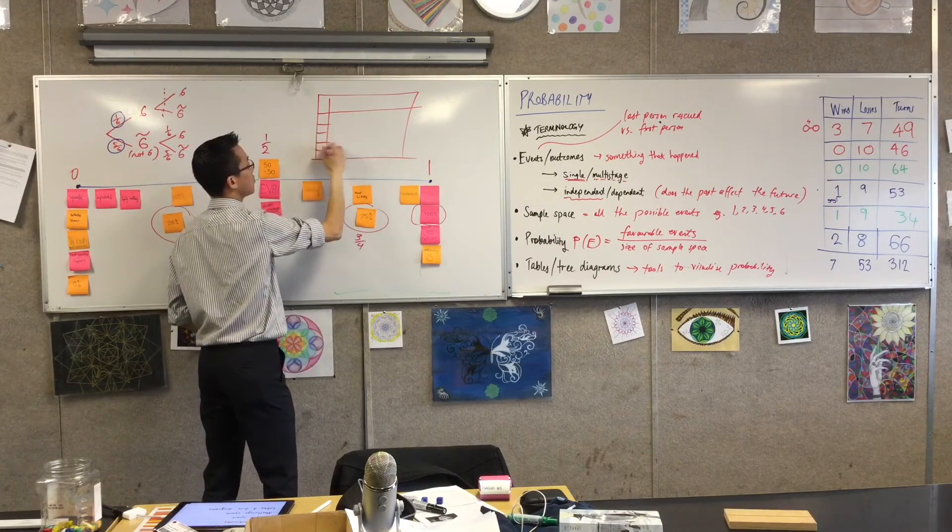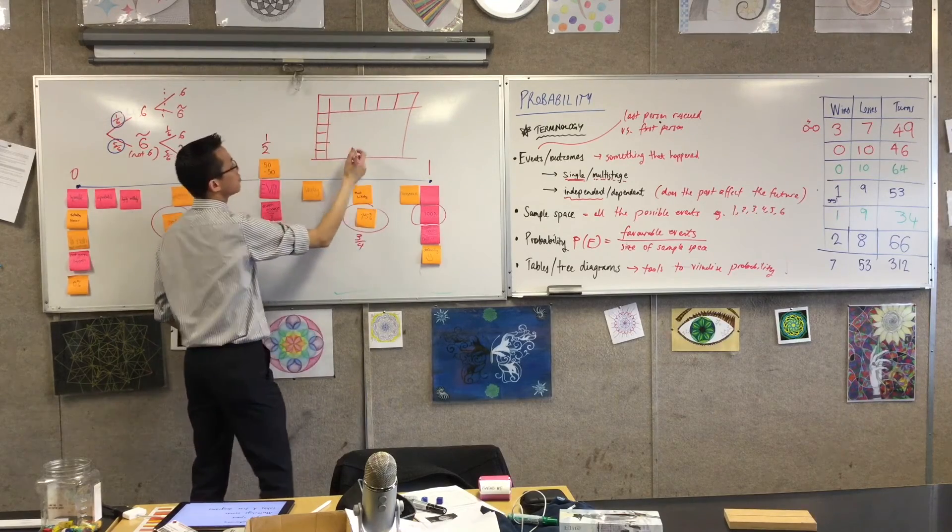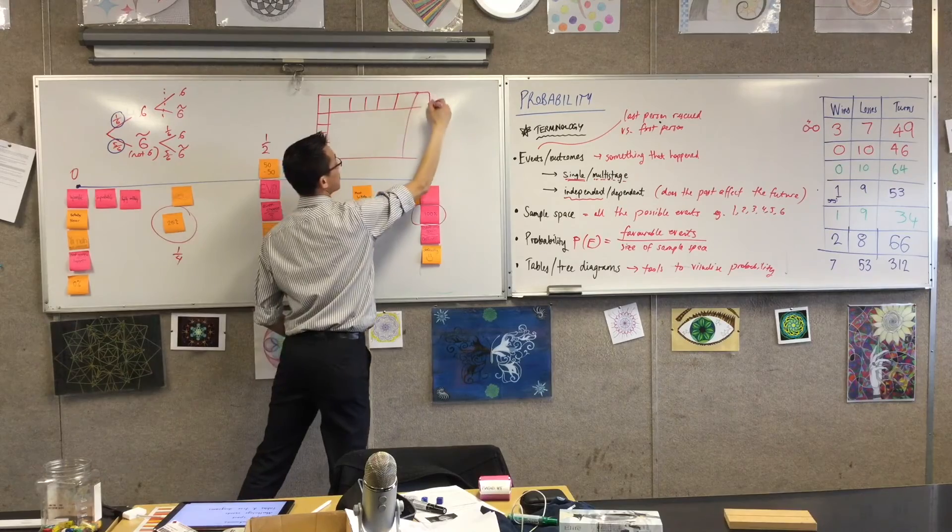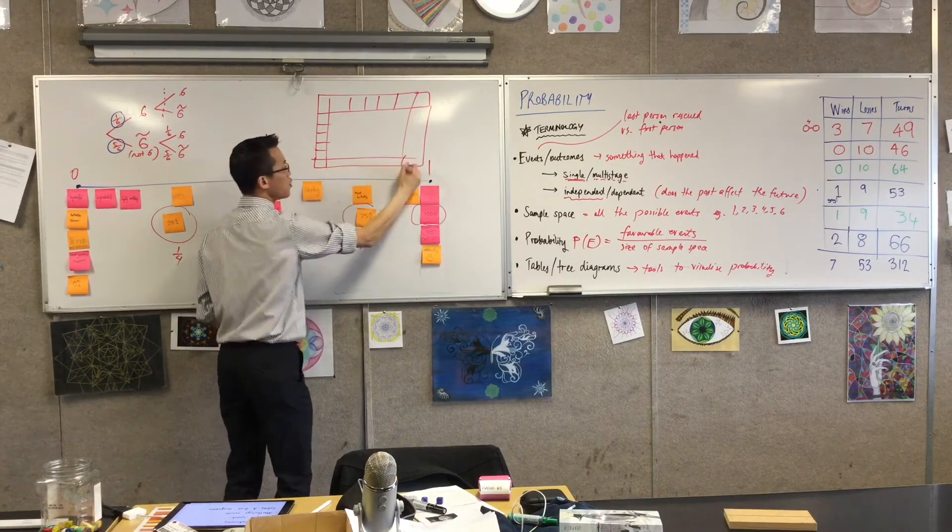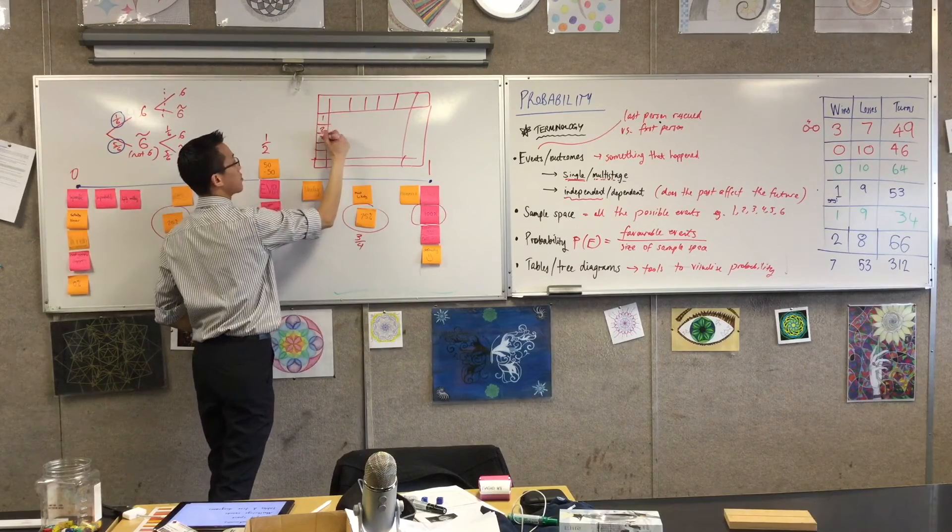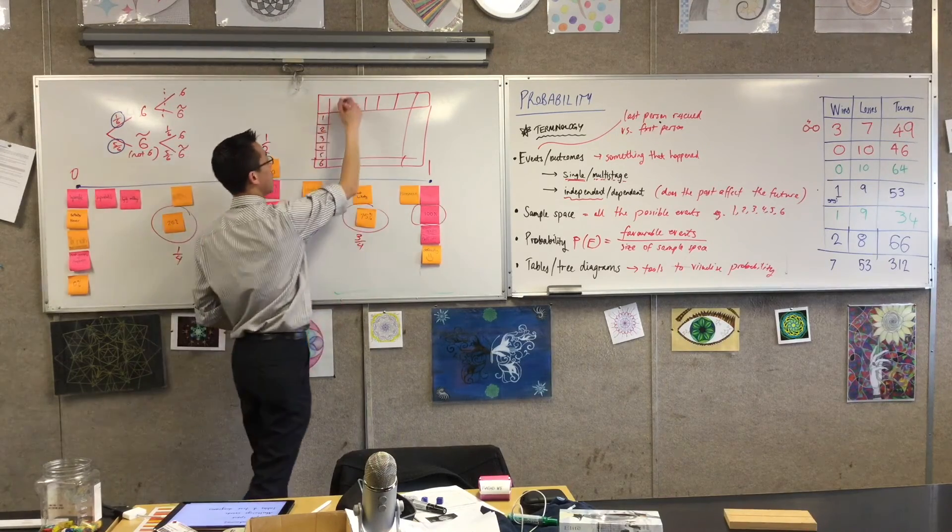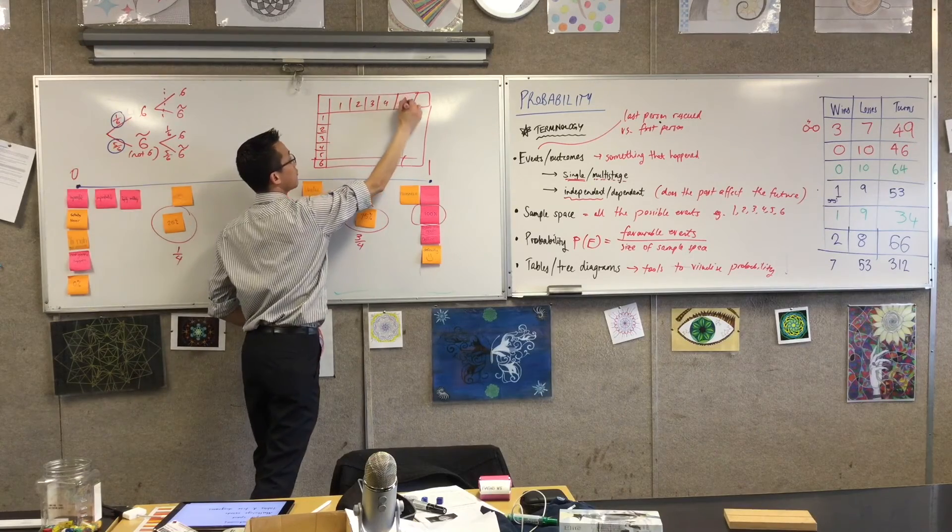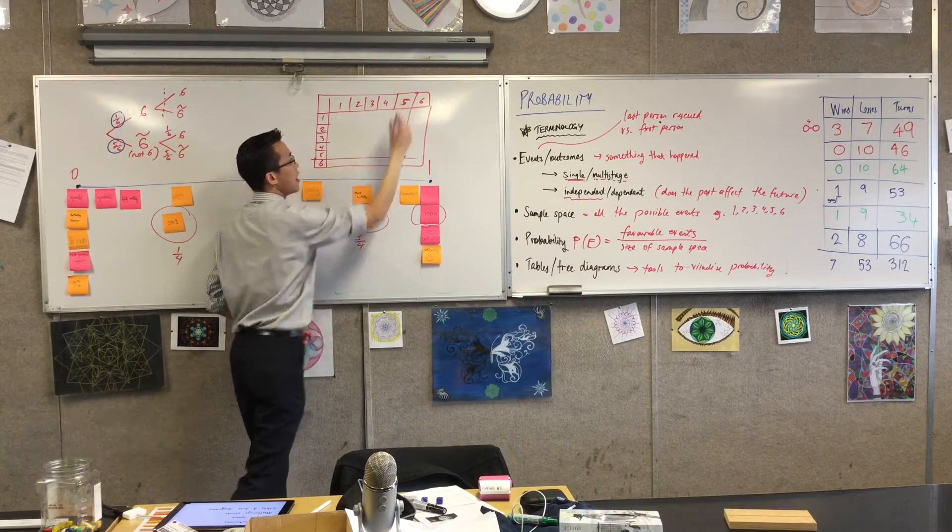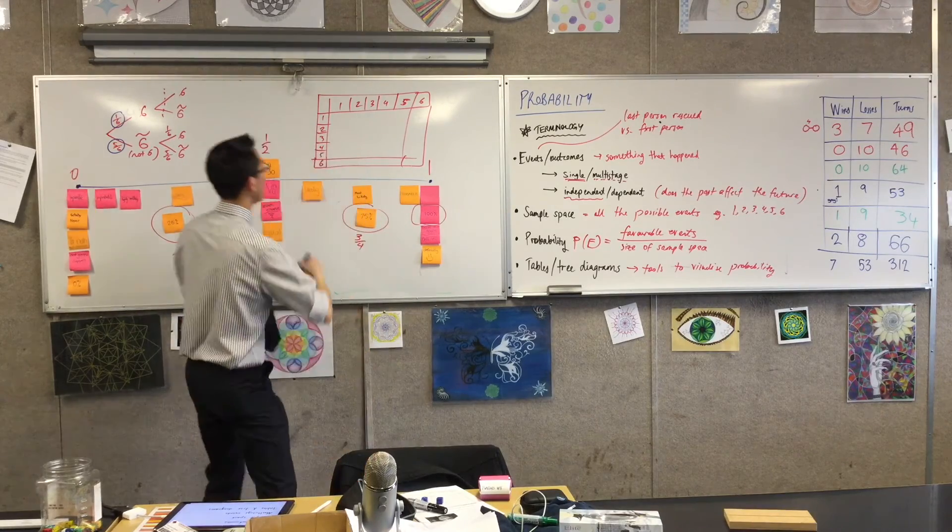You could have a table - one side represents one of the dice: one, two, three, four, five, six. And the other side will represent the other die: three, four, five, six. And what you'll have is a grid.